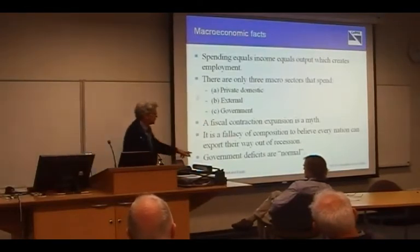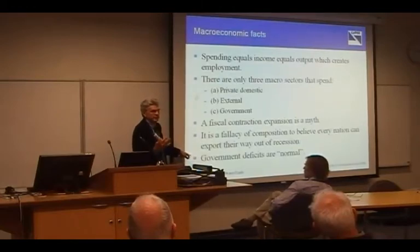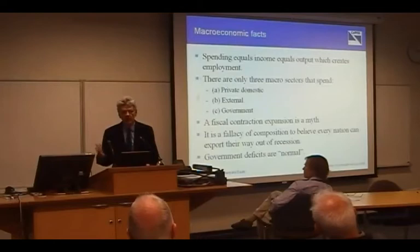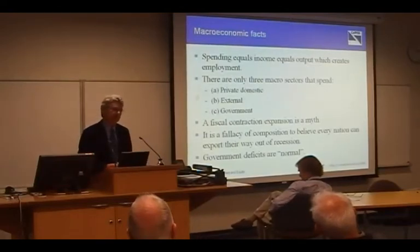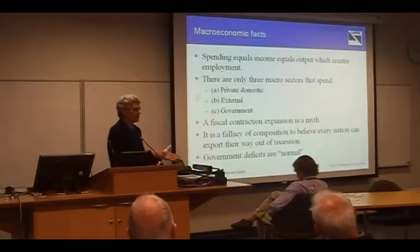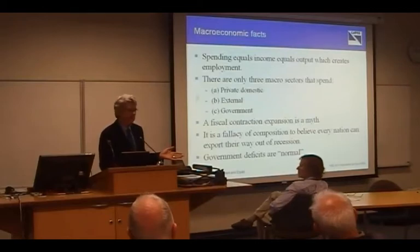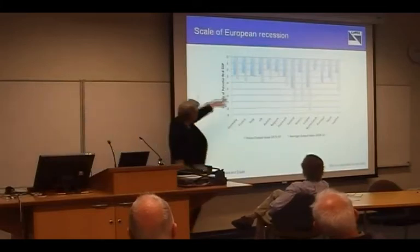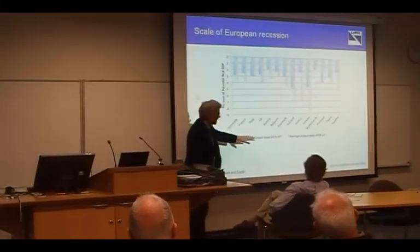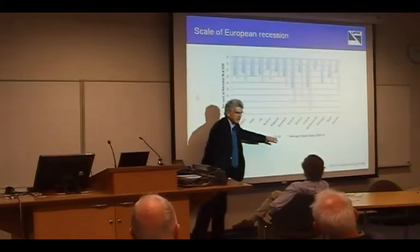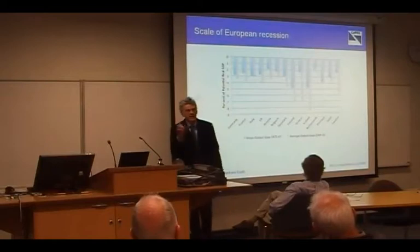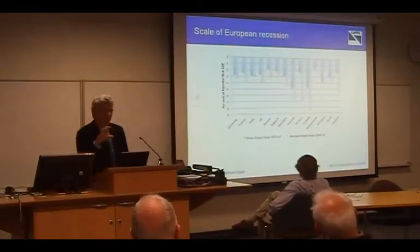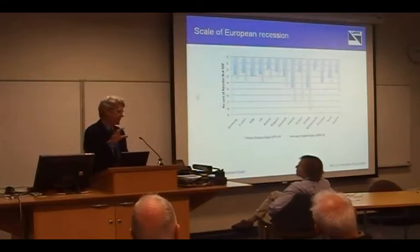One nation's imports is another nation's exports. Imports are a function of low domestic income. Government deficits are normal. This period in the last 15 years, where the private sector has been dis-saving and maintaining consumption via credit and governments have been able to run surpluses because of high levels of activity, is very atypical in our history. This is the European situation: the blue bars show the average output gaps between 1975 and 1997, the recessions that occurred in this period.